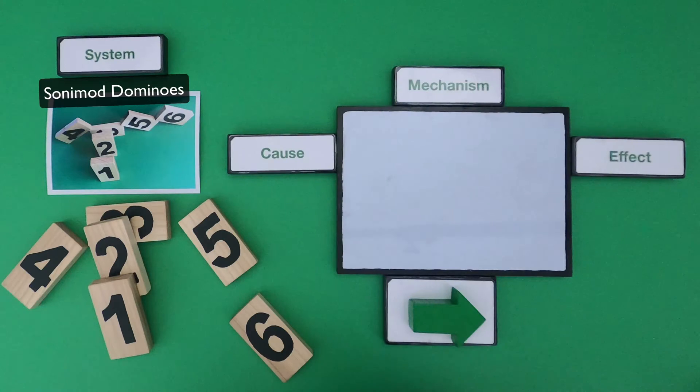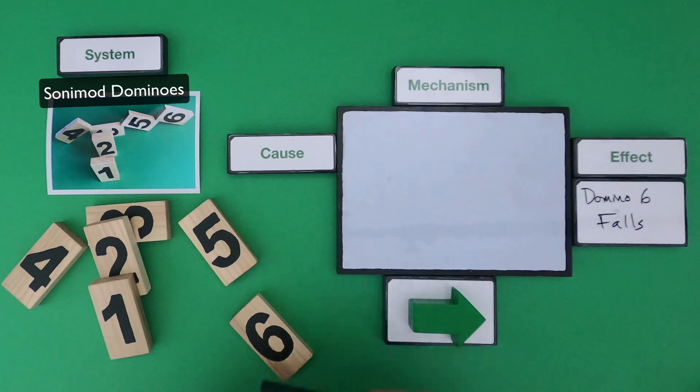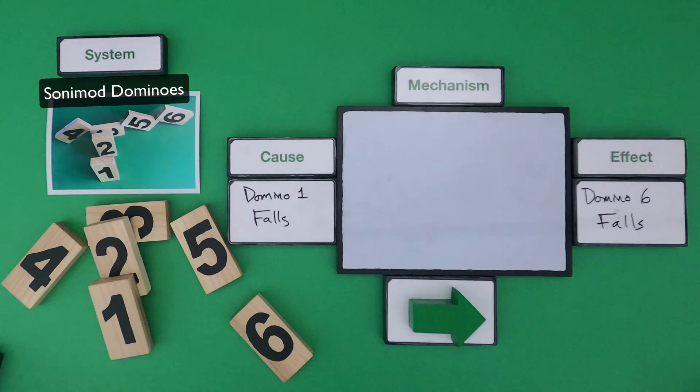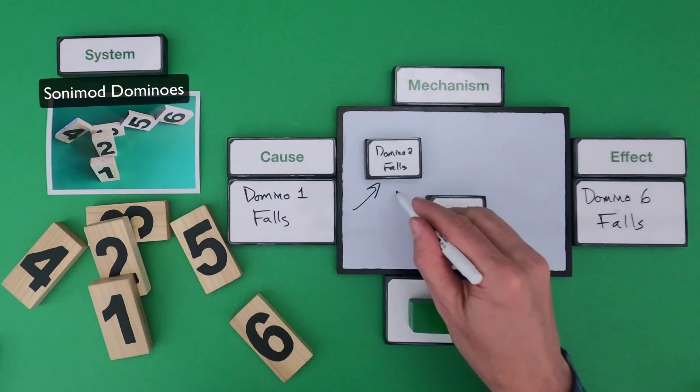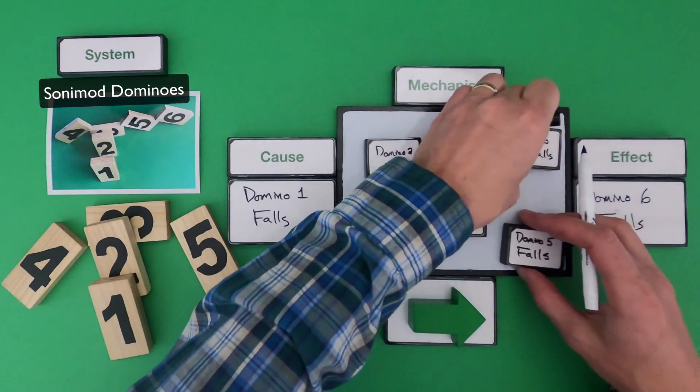Okay, the first thing that I saw is the final effect. So the final effect is domino six falls over and the initial cause is that domino one falls over. Okay, let me sketch out my mechanism. The first thing that I saw happen is domino one falls, which causes domino two to fall. Then domino two falls over, which knocks over domino three.